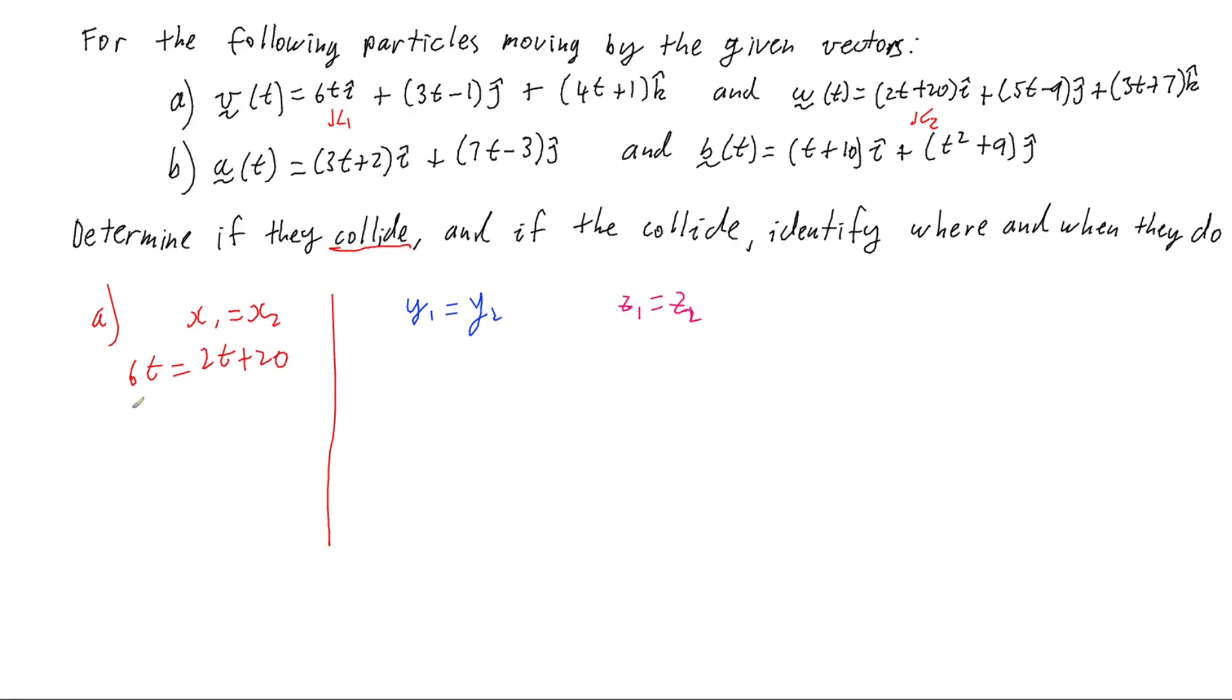So then if I subtract 2t from both sides, I'm going to have 4t equals 20, divide both sides by 4, I get t equals 5. So this means that at t equals 5, I'm going to assume seconds, the x coordinates were the same.